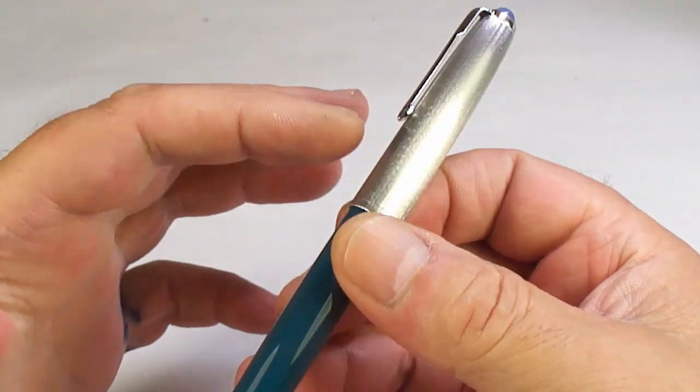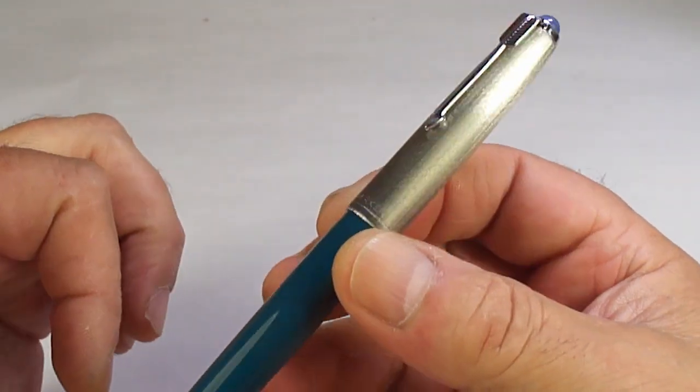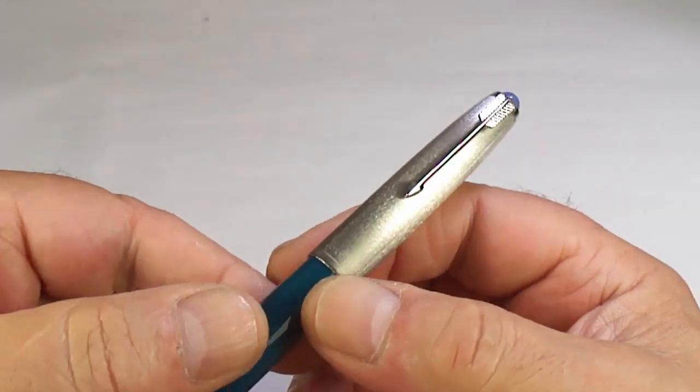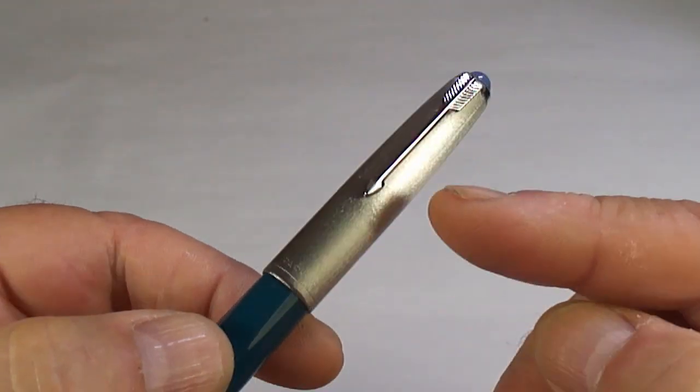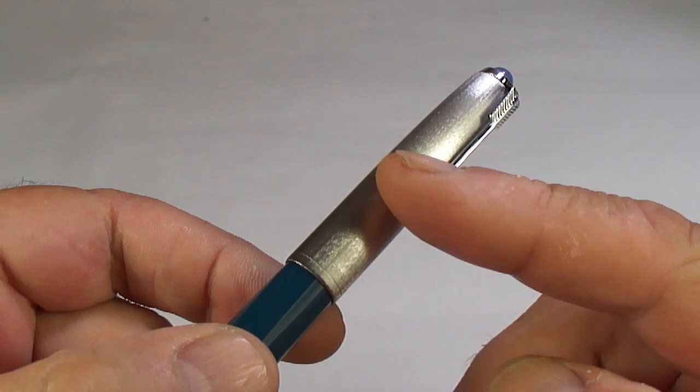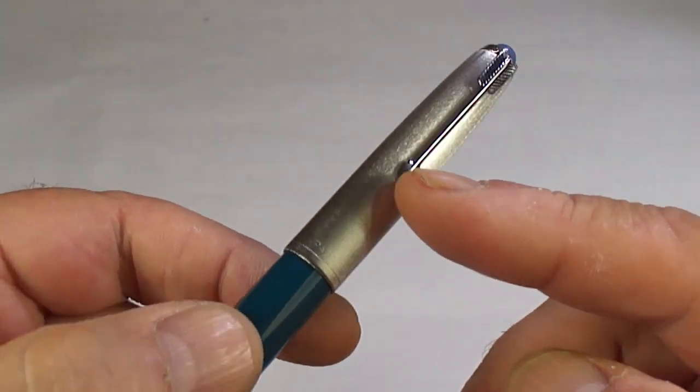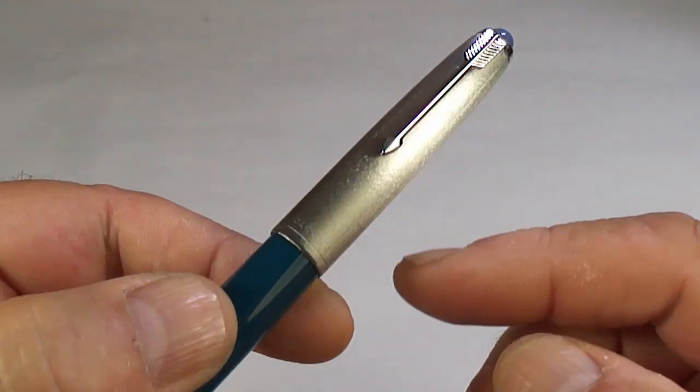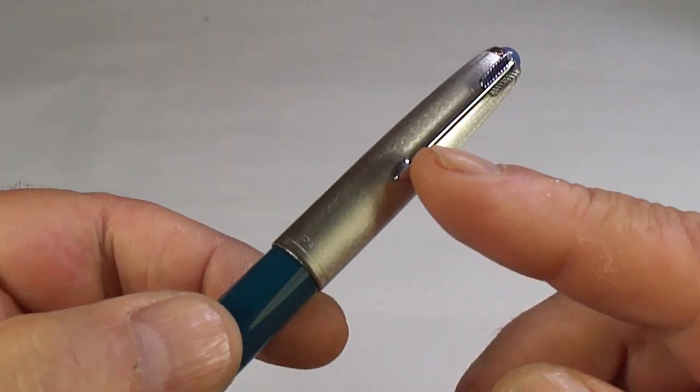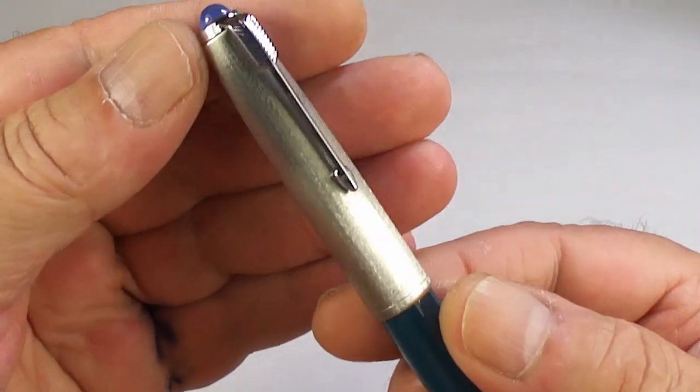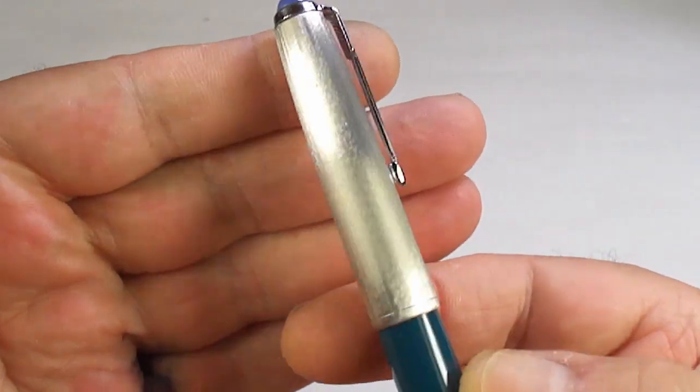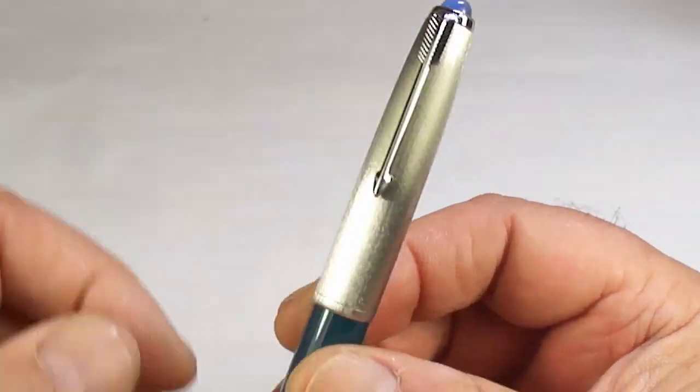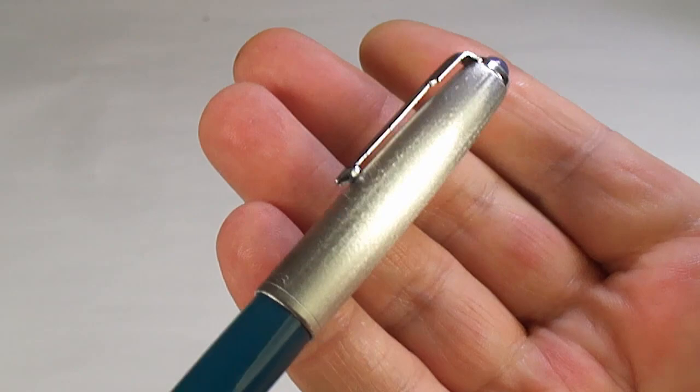For some of you people that may know or may not know, on these Parker 51s with the luster alloy caps, occasionally what happens is the clips are actually loose and they leave a very unsightly mark on the caps. This cap had that particular mark; it didn't look very nice and had numerous scratches to it.